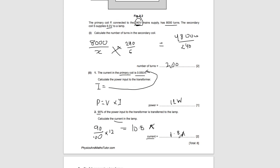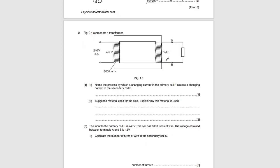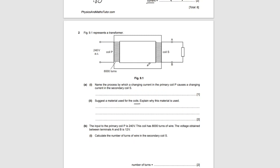The next question asks: name the process by which a changing current in the primary coil causes a changing current in the secondary coil. The answer is mutual induction, or you can say electromagnetic induction. It then asks what material can be used for the coils. Since the coil carries current we need a good conductor — copper is the correct answer. Silver is also a good conductor but is expensive, so copper is the expected answer.